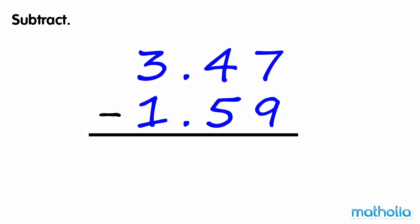Subtract. Find 3.47 minus 1.59. Start by subtracting the hundredths. We cannot subtract 9 hundredths from 7 hundredths, so we regroup 1 tenth into 10 hundredths. We now have 17 hundredths. 17 hundredths minus 9 hundredths equals 8 hundredths.